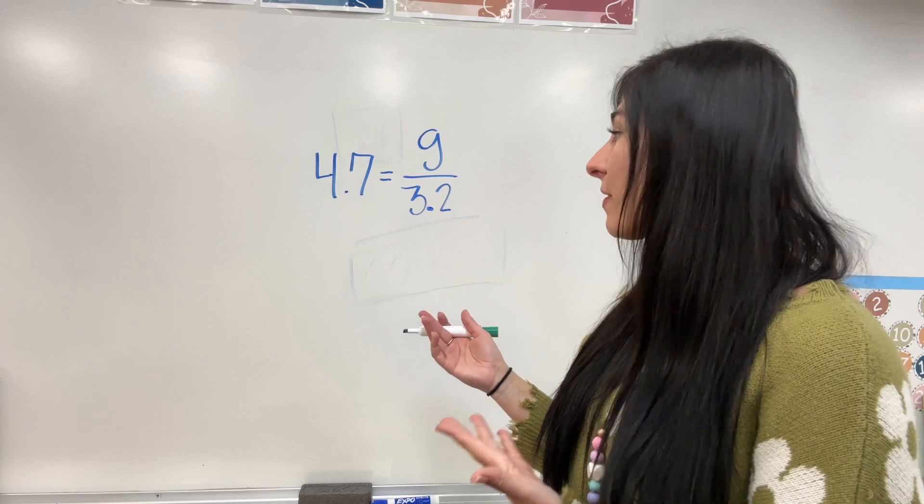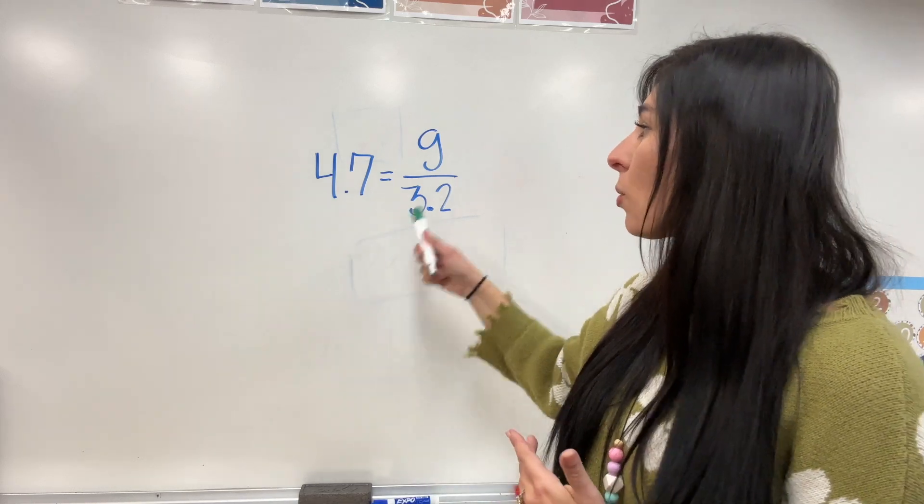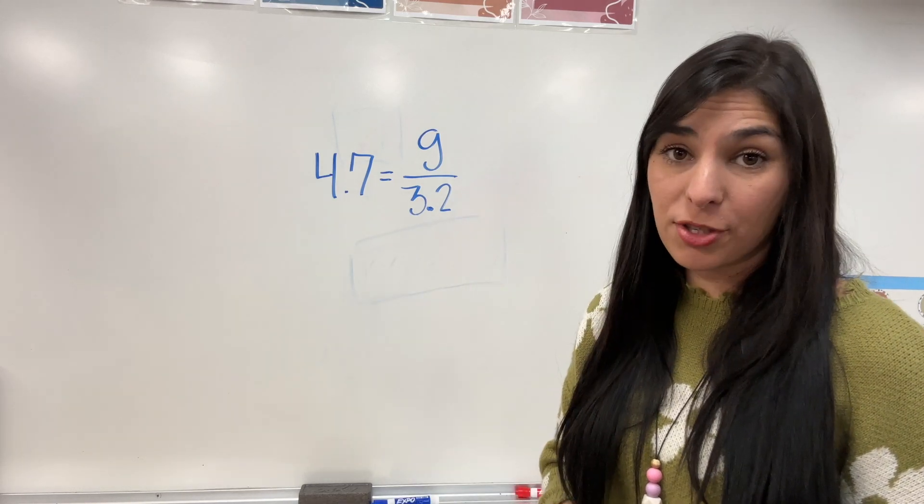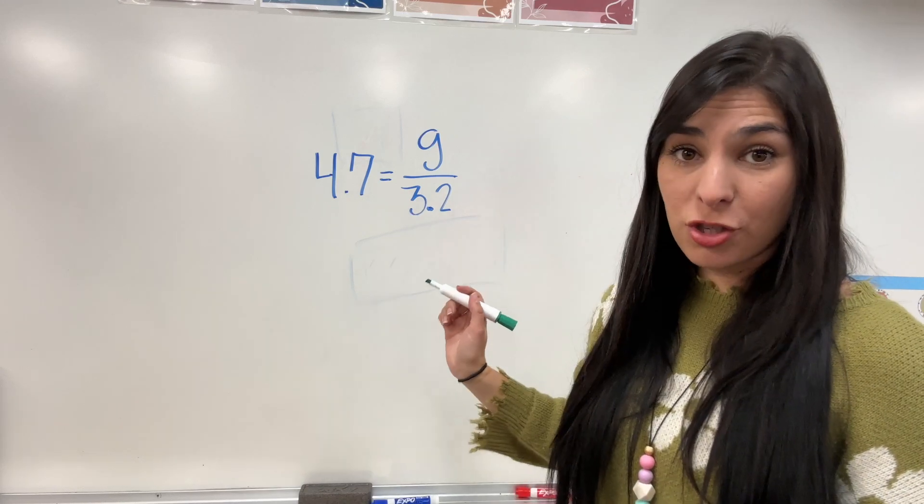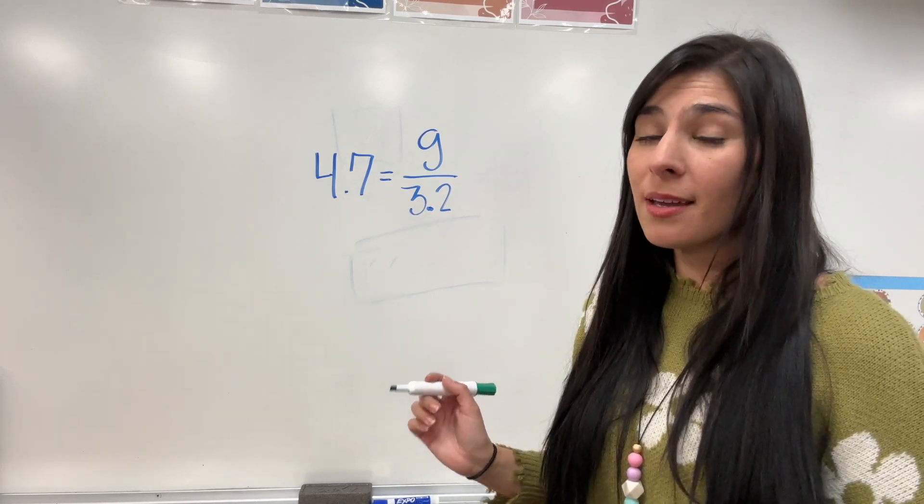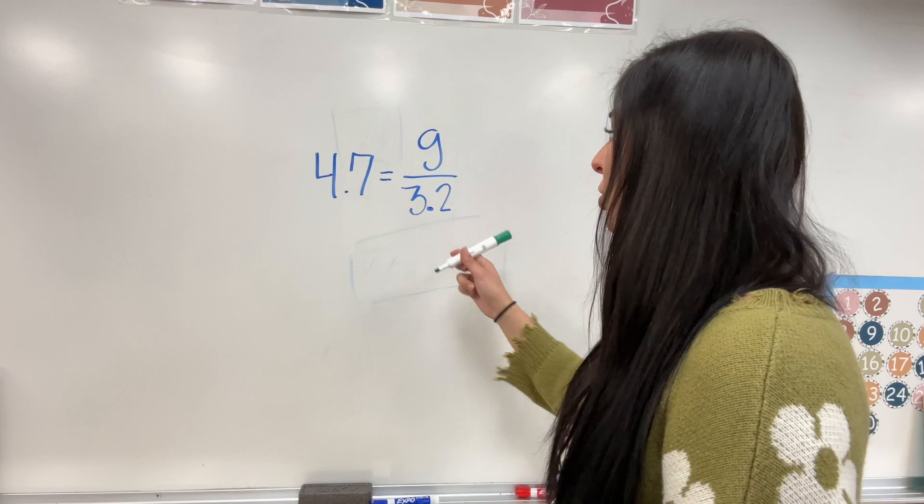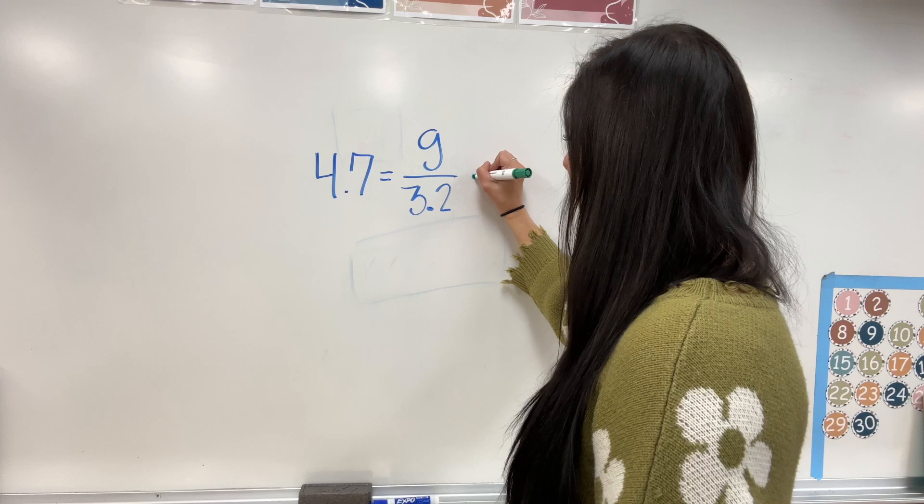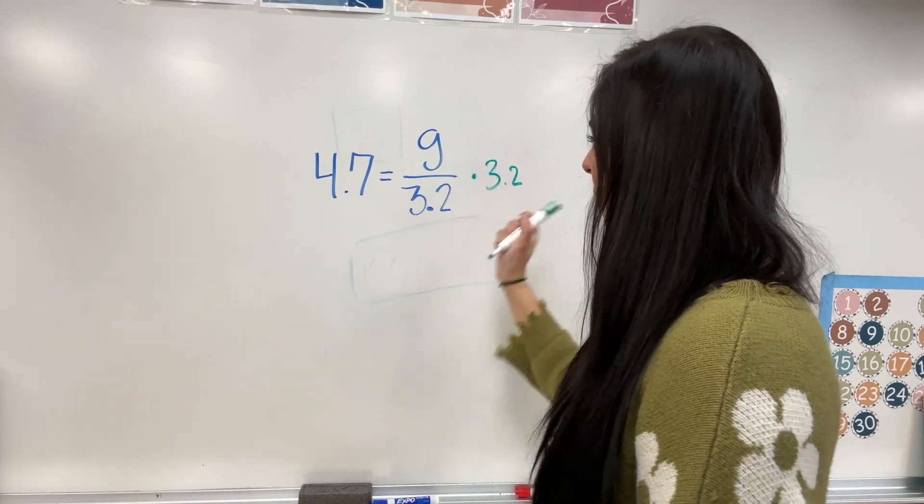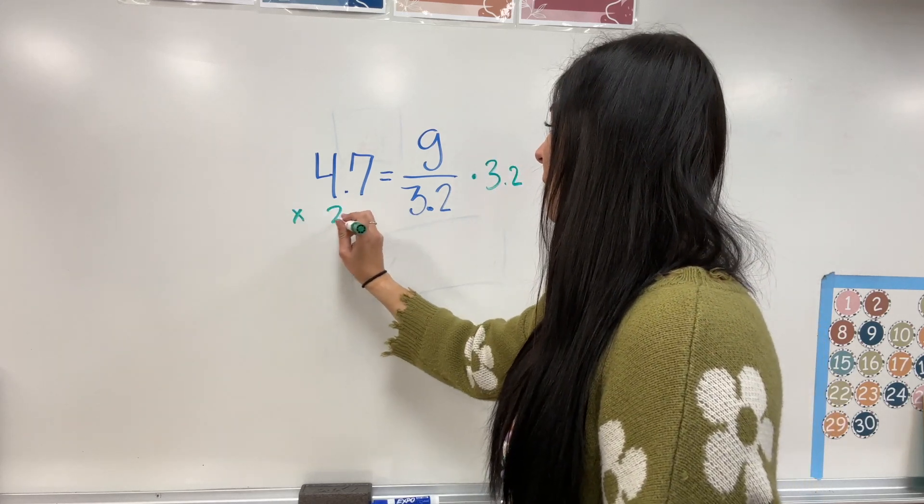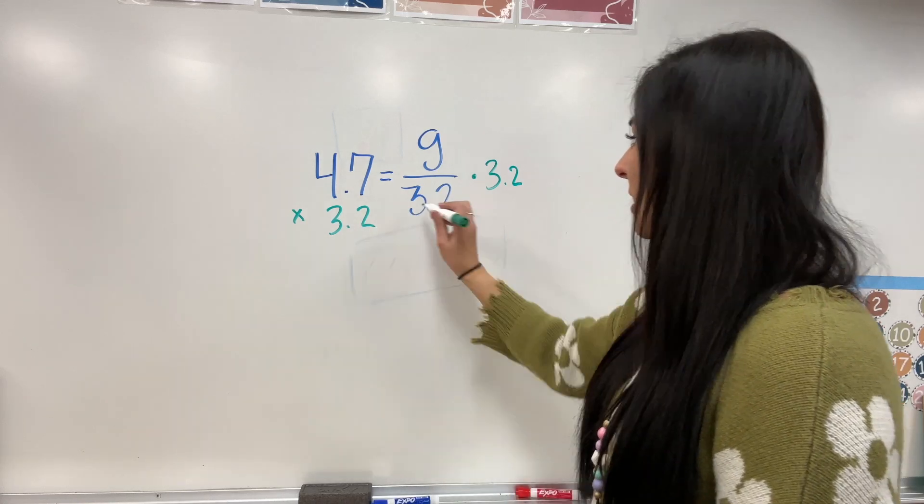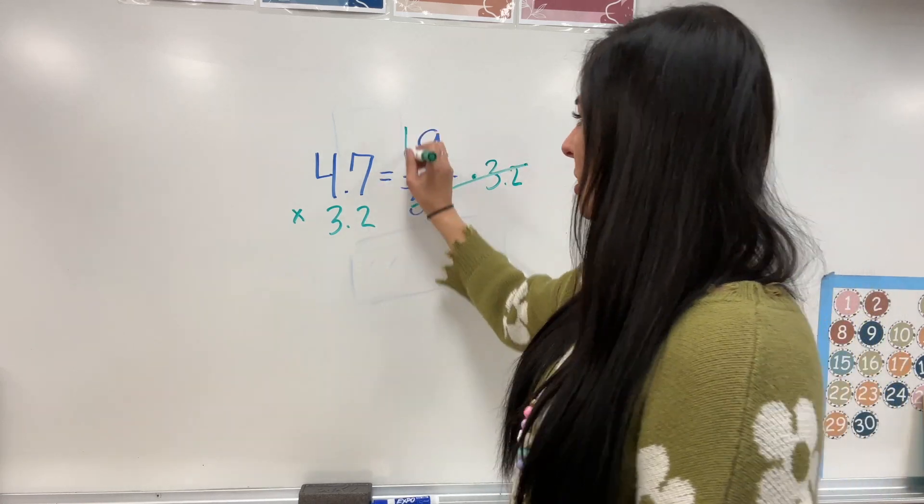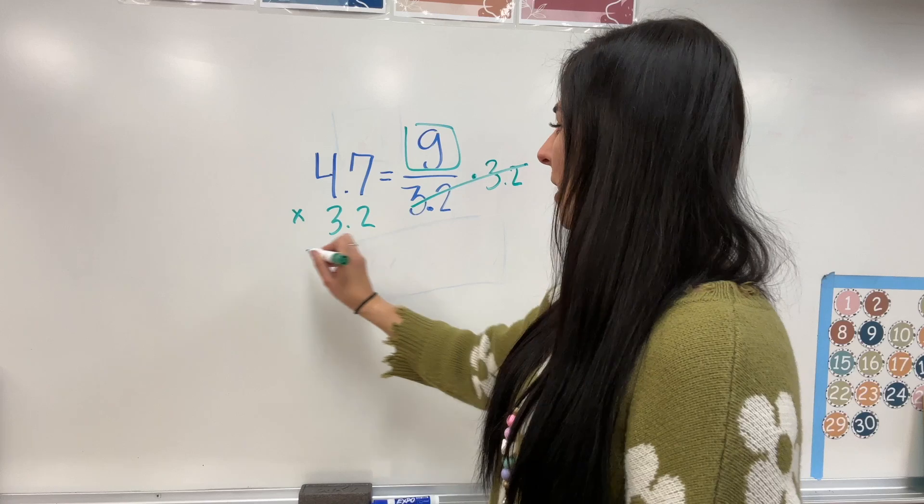Okay. So, we have another division equation. I have 4.7 equals G over 3.2. Fraction means division. So, the inverse operation of this would be multiplication. I'm going to multiply the denominator to both sides. So, 3.2. I'm going to multiply 3.2. These get to cross out. G is by itself. And, now, I multiply these.